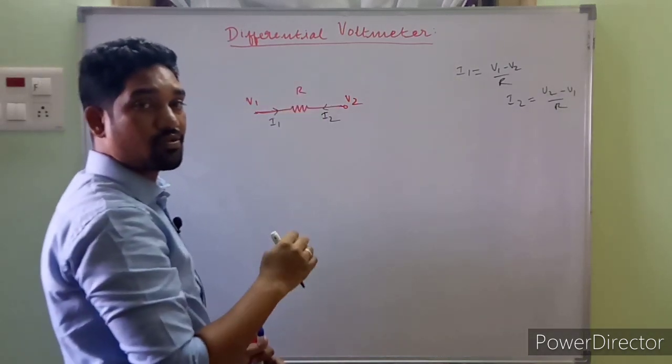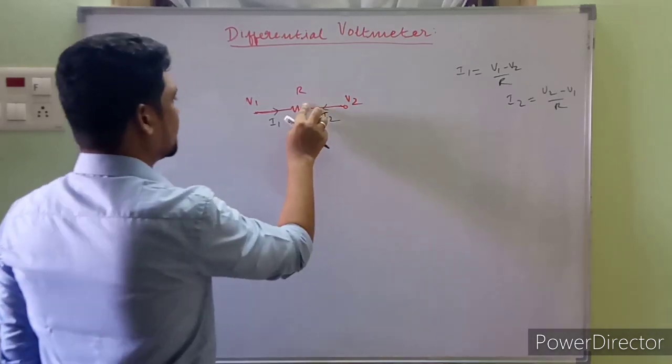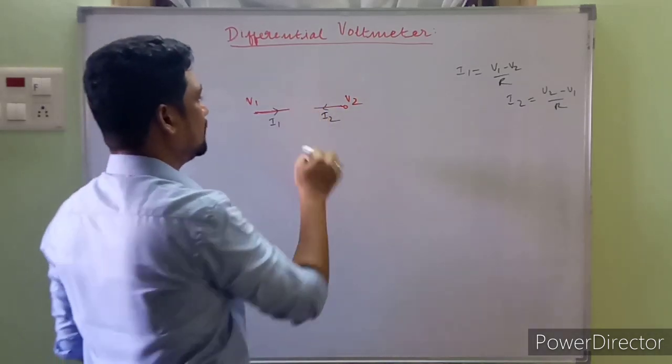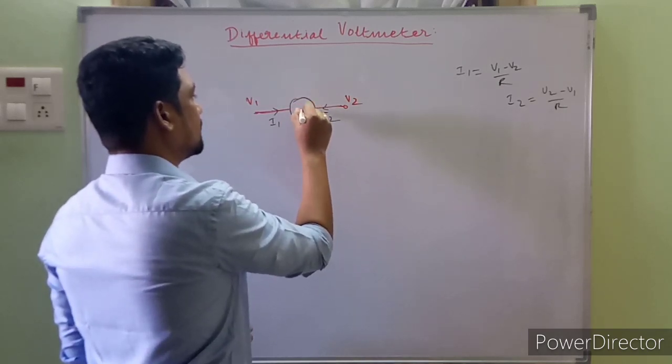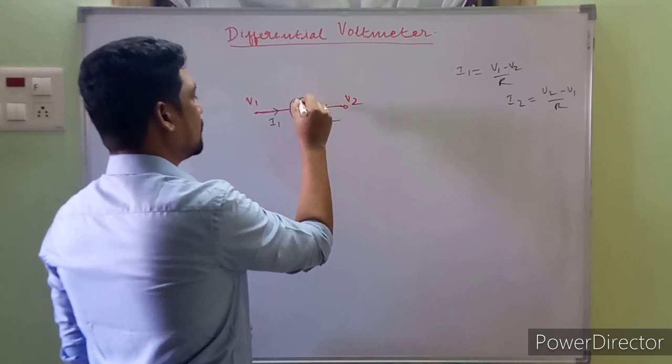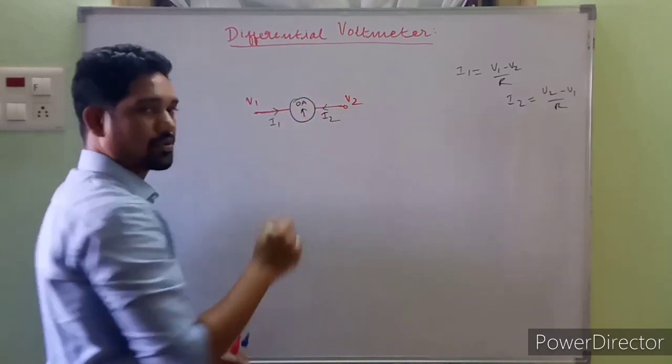We are comparing the unknown voltage with a known standard voltage. So what if, other than this resistance, we have a null detector in this place? It's a null detector having only one reading - it indicates only zero amperes.